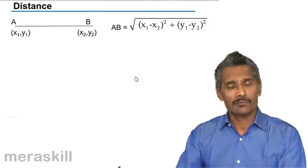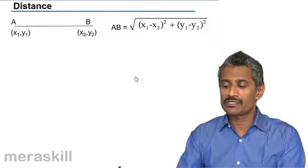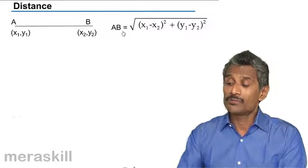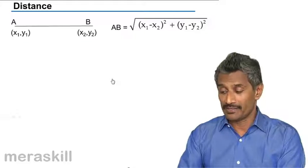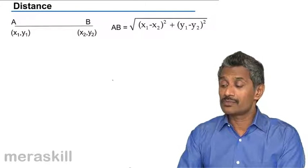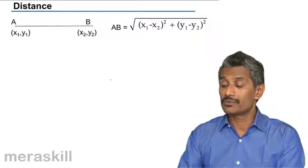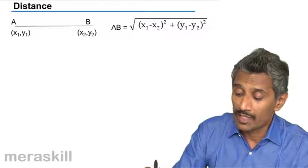After this we have a simple formula which is nothing but how to find the distance between two points: x1 minus x2 the whole square plus y1 minus y2 the whole square.